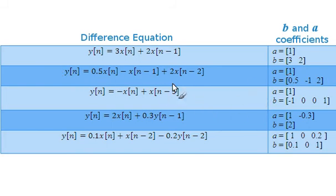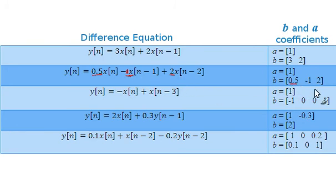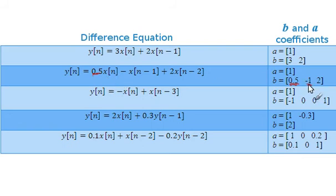The three coefficients in the difference equation associated with the X terms are 0.5, minus 1 (not explicitly shown but there), and 2 — giving us three B coefficients. It's important to get the order correct: the first B value corresponds to X(N), the second to X(N-1), and the third to X(N-2).